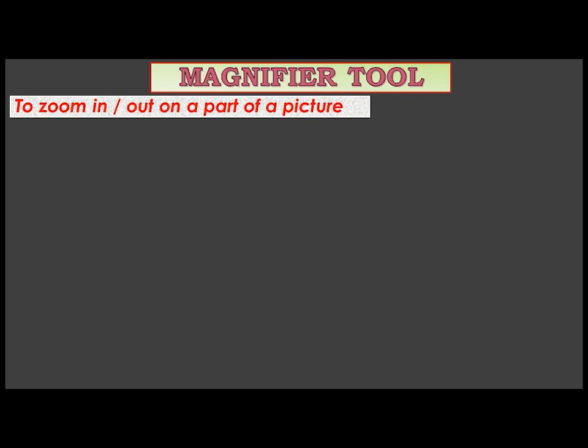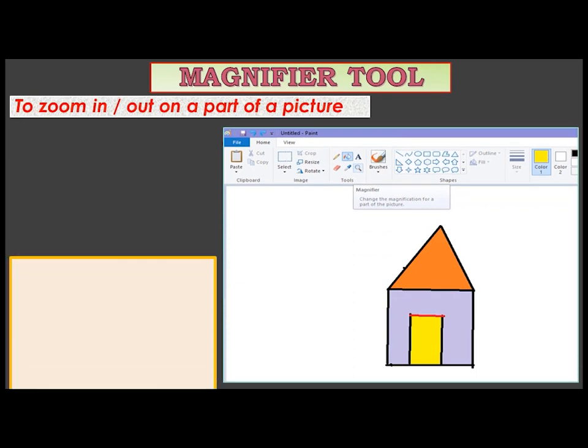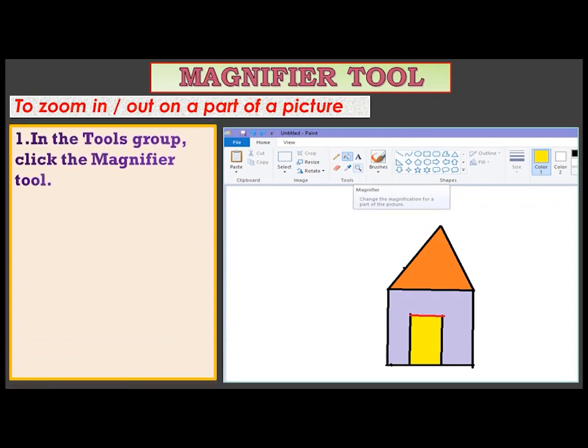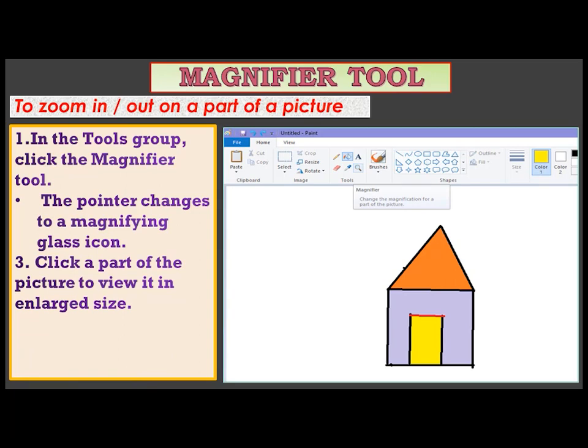Now let us see children how to zoom in or zoom out on a part of a picture. In the tools group, click the magnifier tool. The pointer changes to a magnifying glass icon. Click a part of the picture to view it in the enlarged size.